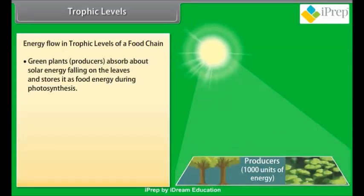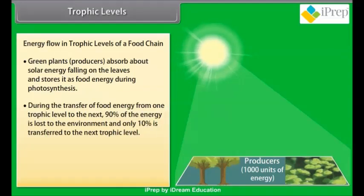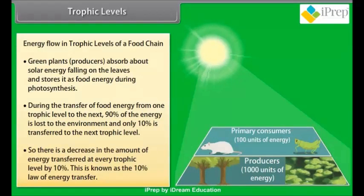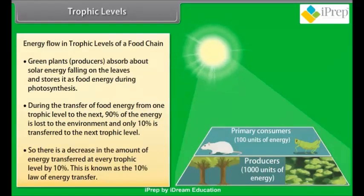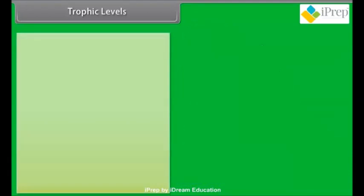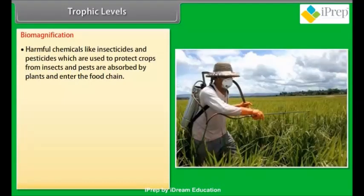Green plants — producers — absorb about one percent of solar energy falling on the leaves and store it. During the transfer of food energy from one trophic level to the next, ninety percent of the energy is lost to the environment and only ten percent is transferred to the next trophic level. This decrease of ten percent at every trophic level is known as the ten percent law of energy transfer.